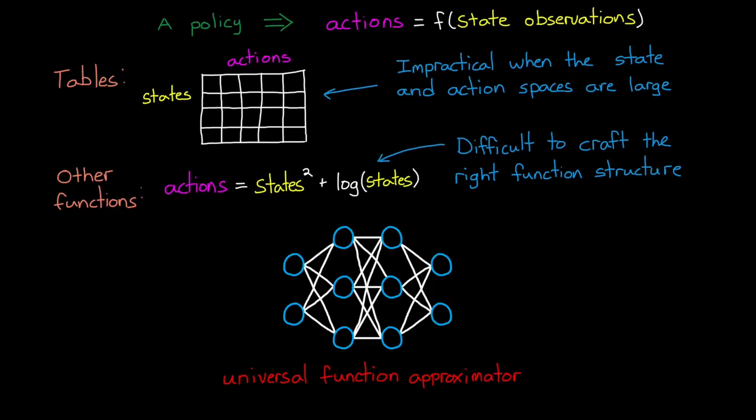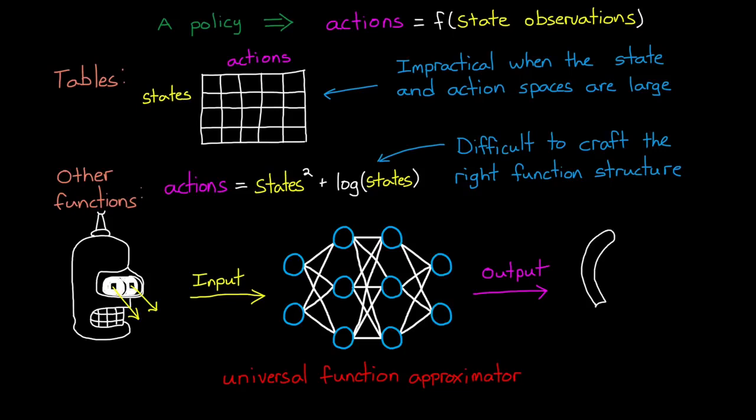This means that given the right combination of nodes and connections, we can set up the network to mimic any input and output relationship. And this is good for us because we can use, say, the hundreds of pixel values in a robotic vision system as the input into this function, and then the output could be the actuator commands that drive the robot's arms and legs. Even though the function might be extremely complex, we know that there is a neural network of some kind that can achieve it.